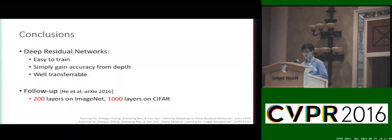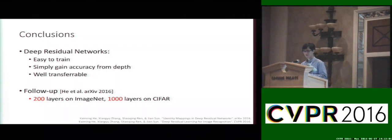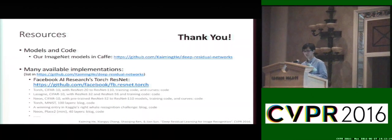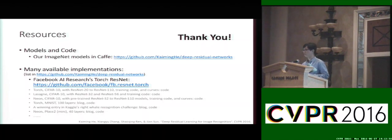In conclusion, we have proposed deep residual networks which are very easy to train and can simply gain accuracy by going deeper. More importantly, these deep residual networks are very good features that are well transferable to many other recognition tasks. As follow-up work, we can now train 200-layer ResNets on ImageNet and 1000-layer ResNets on CIFAR. We have released our pre-trained model on ImageNet based on Caffe, and Facebook AI Research has also released their training code based on Torch, with many other third-party implementations available. Thank you for your attention.